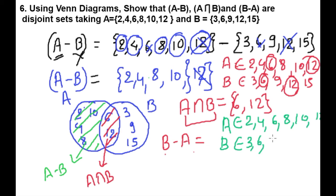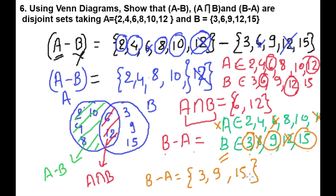3, 6, 9, 12, 15. Now we write the elements which are only available in B, not in A. So B-A = {3, 9, 15}. We can see this area: 3, 9, 15. This yellow shaded area is B-A.